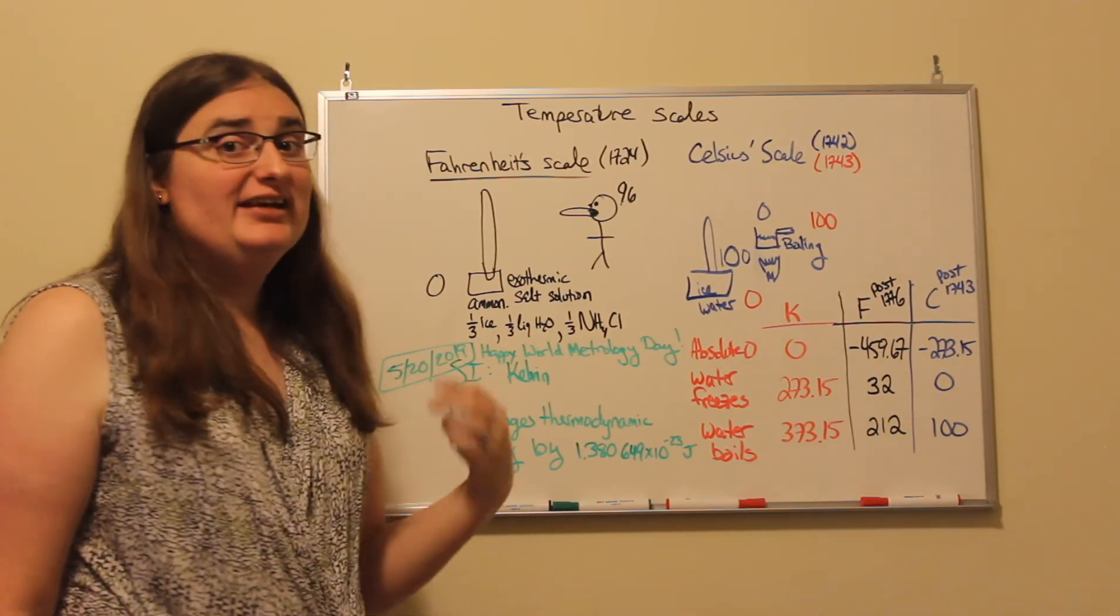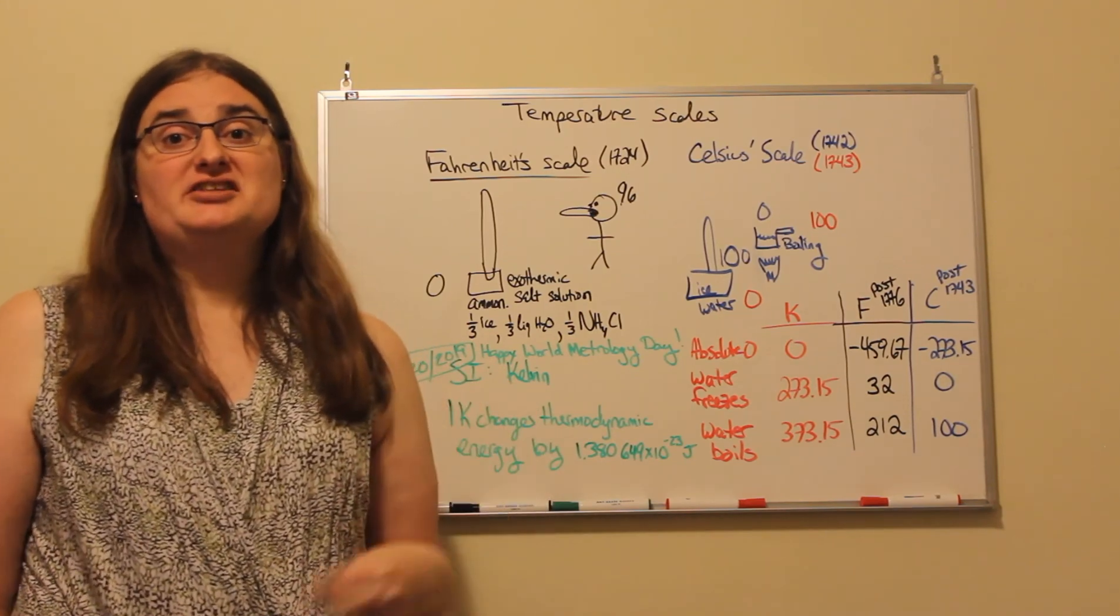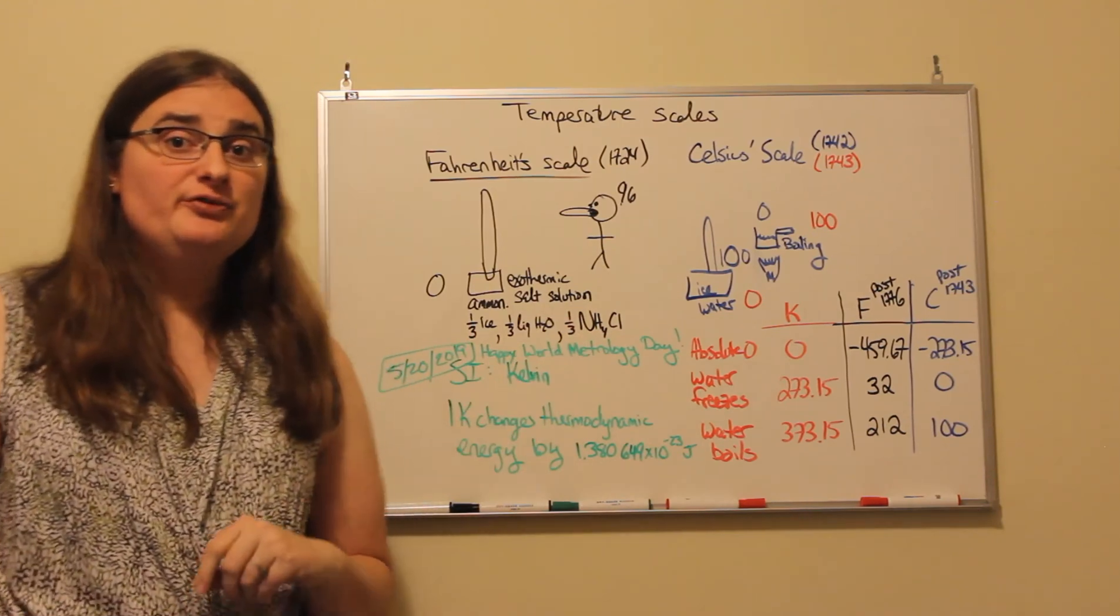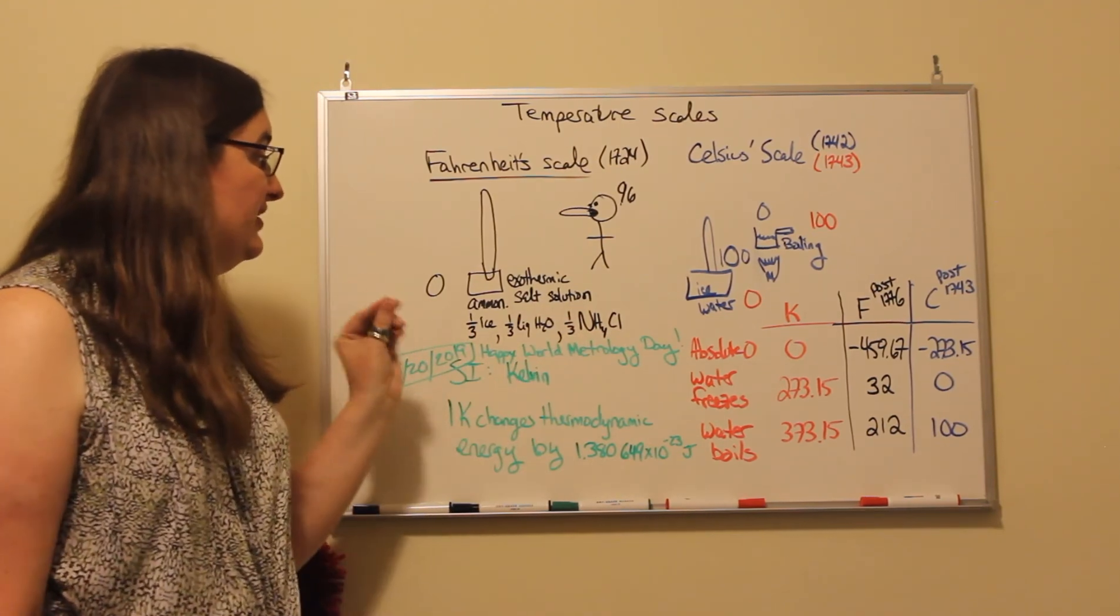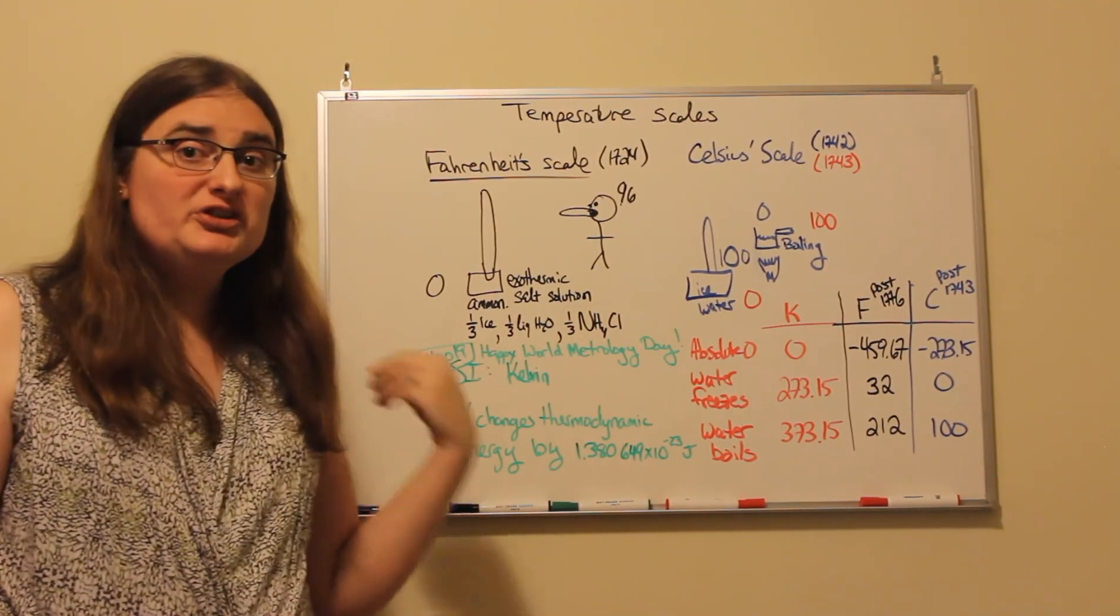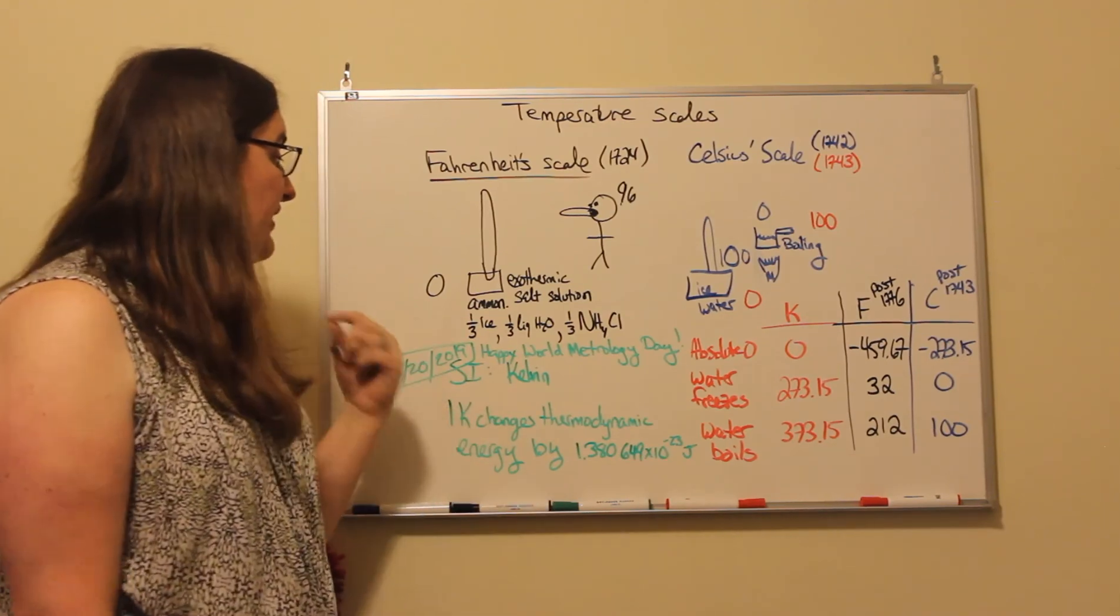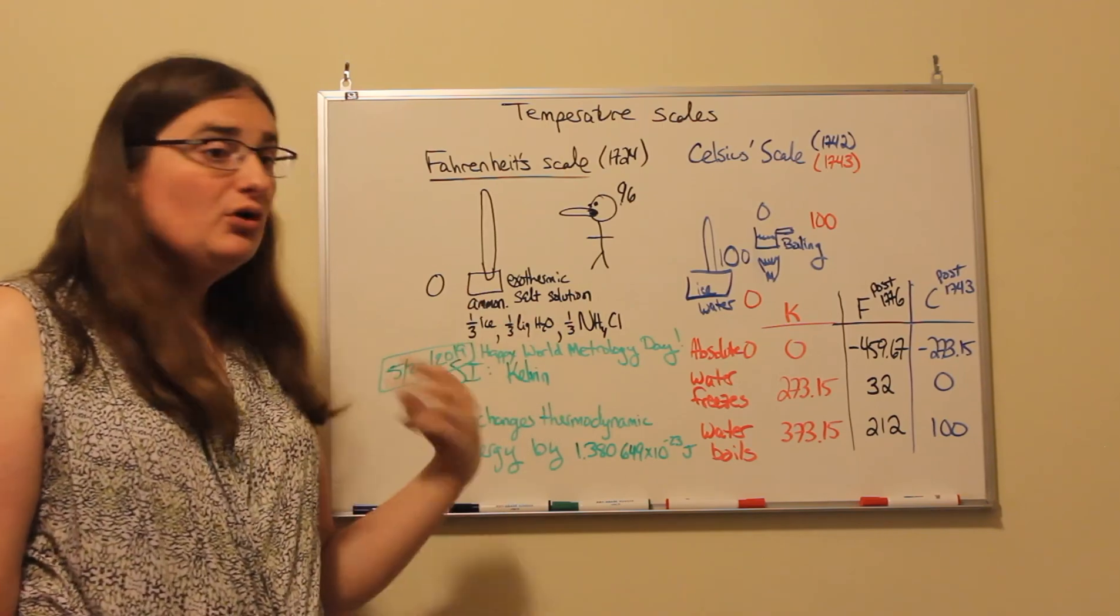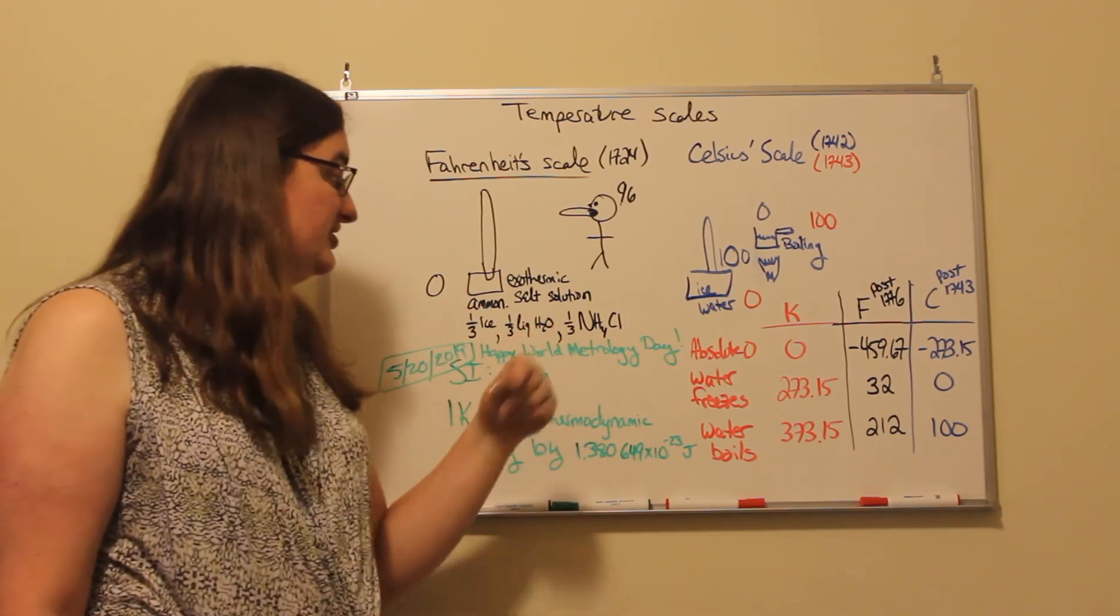Fahrenheit's scale was one of the first standardized temperature scales proposed. His original scale, set up in 1724, was based on making an exothermic ammonia salt bath that had one-third ice, one-third liquid water, and one-third ammonia chloride, NH4Cl.